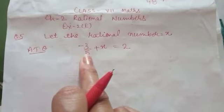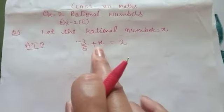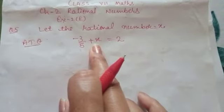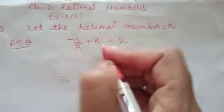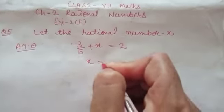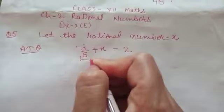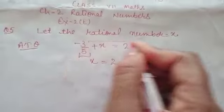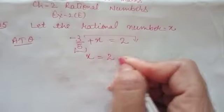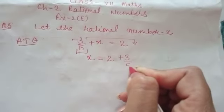What should we add in minus 3 over 5? We add x to get this. Now we will find the value of x: write down x as it is, 2 as it is, take this number to the other side, you will get plus 3 over 5.